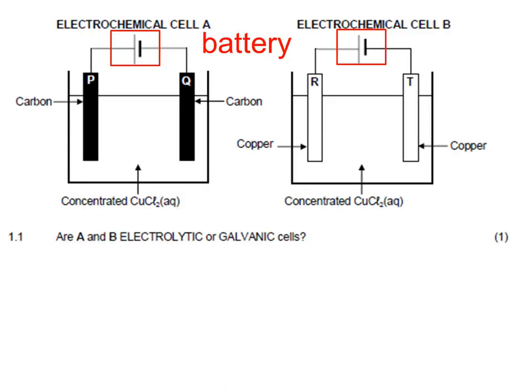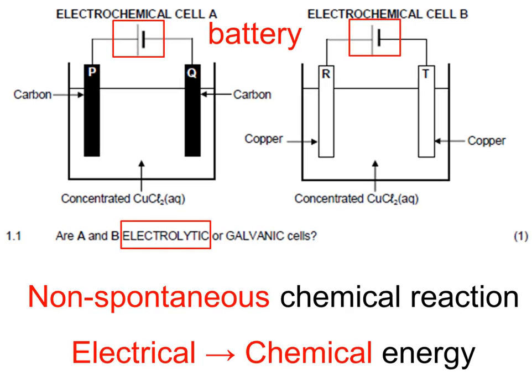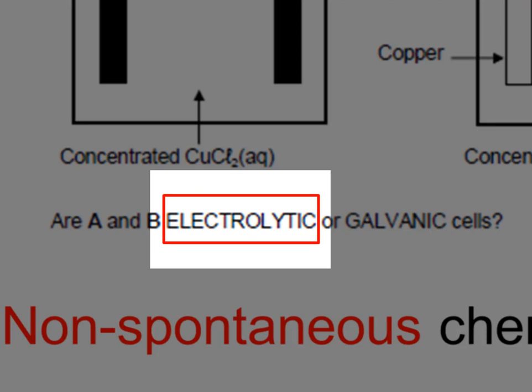We can see that this circuit has a battery, therefore we know that electrical energy is being converted to chemical energy as the battery forces a non-spontaneous chemical reaction to take place.